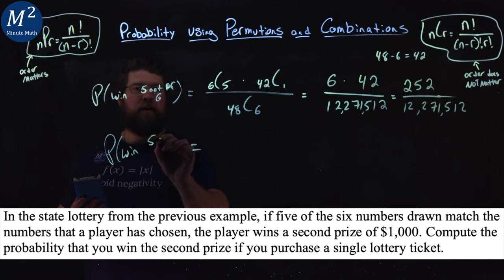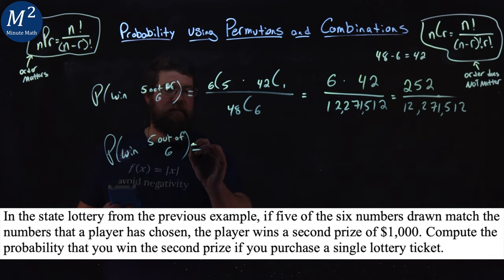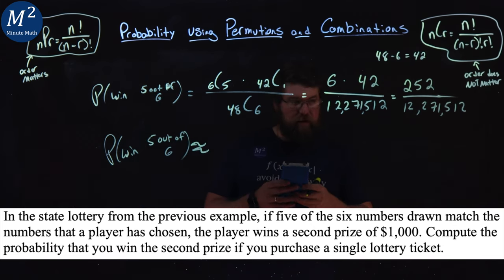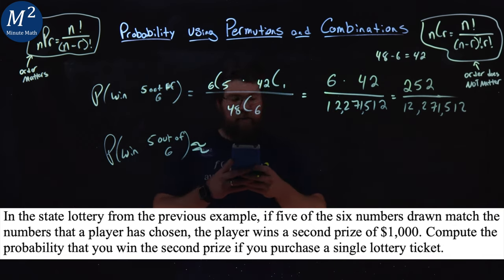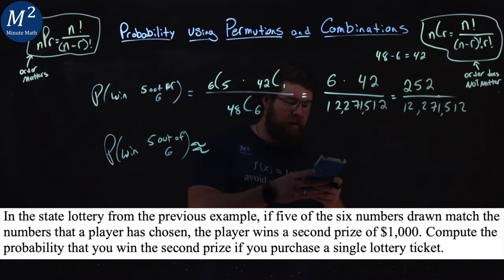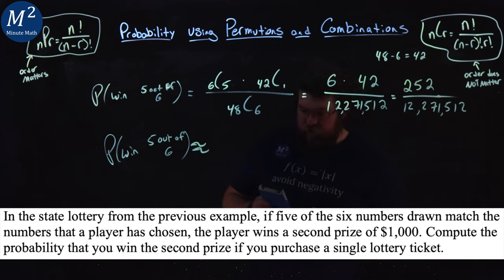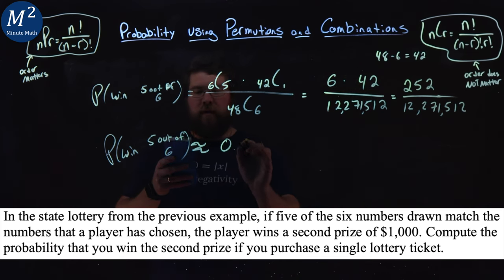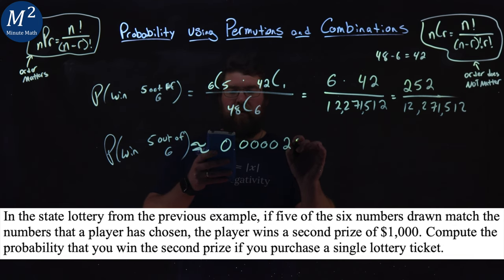This is the probability of five out of six. We can write that as a decimal. 252 divided by 12,271,512. Let me make sure this is correct. Yes. So that's approximately 0.0000205.